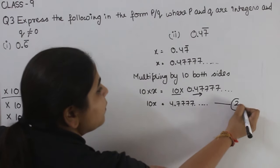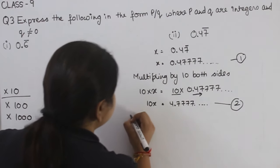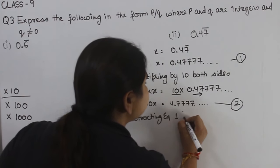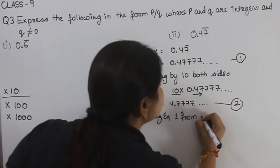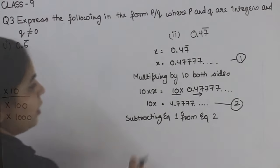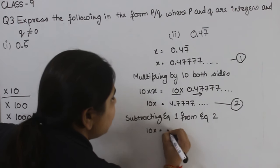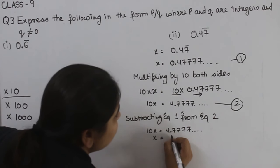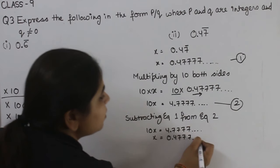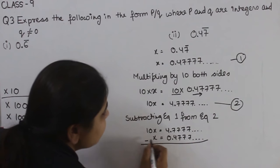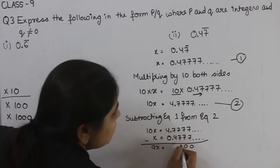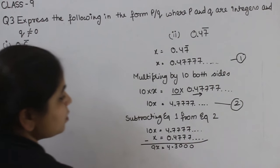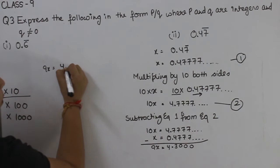This is equation number 1 and equation number 2. Subtracting equation number 1 from equation number 2: 10x minus x is equal to 9x. The repeating parts cancel: 4.7777... minus 0.4777... gives 9x equal to 4.3.